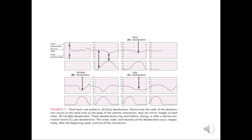Here we see the fetal heart rate pattern in relation to contractions. Pattern A shows early deceleration — when there is a peak of uterine contraction, the deceleration mirrors it, occurring at the peak of the contraction. Pattern B shows variable deceleration, which may start before, during, or after the uterine contraction. Pattern C shows late deceleration, occurring late after the end of the uterine contraction — this is very important to recognize.